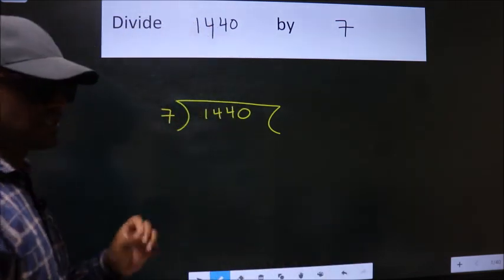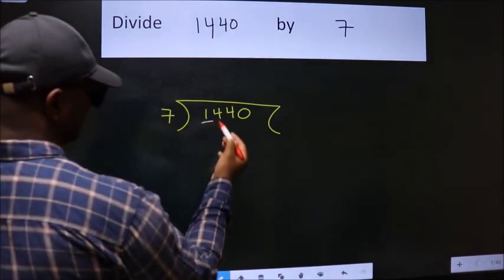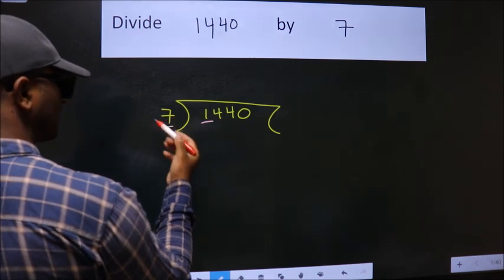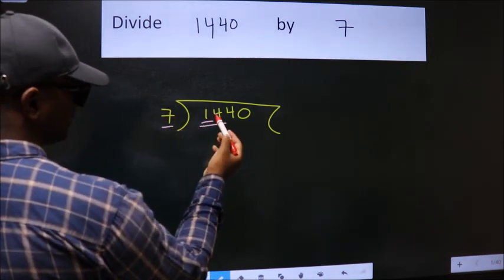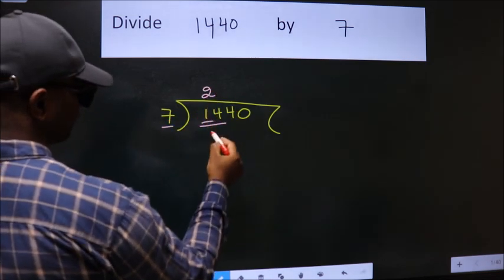This is your step one. Next, we have 1 here, 7 here. 1 is smaller than 7, so we should take two numbers: 14. When do we get 14 in the 7 table? 7 times 2 is 14.